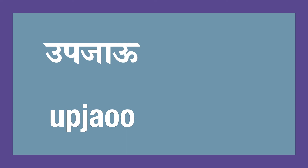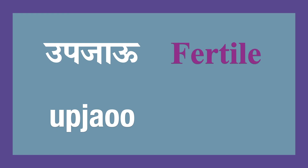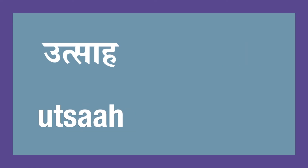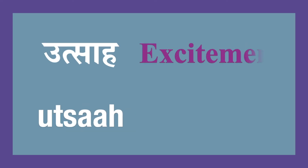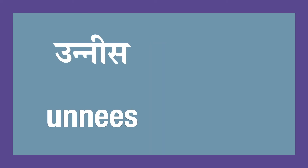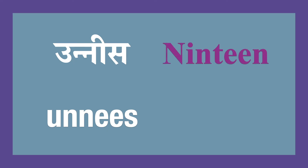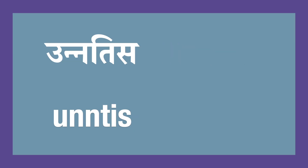Upjau — Fertile. Utsa — Excitement. Unnis — 19. Unattis — 29.